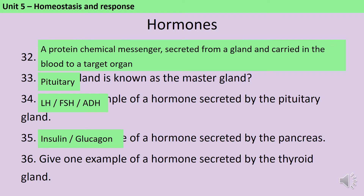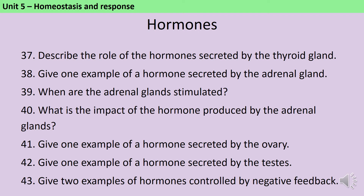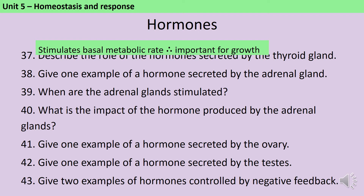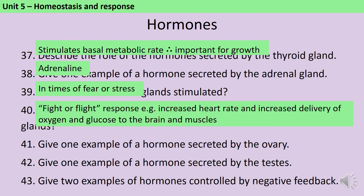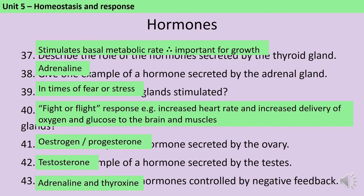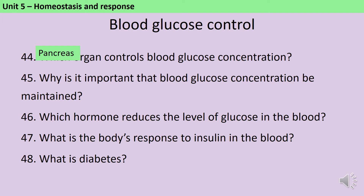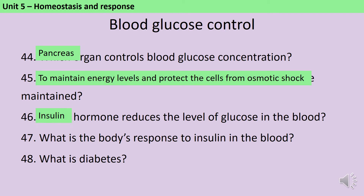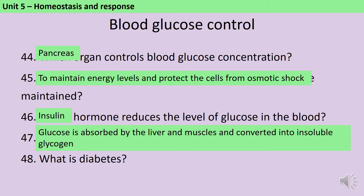The thyroid gland secretes thyroxin, which stimulates the basal metabolic rate and is really important for growth — if you don't have enough thyroxin you might not be as tall as you would have been otherwise. The adrenal glands secrete adrenaline, stimulated in times of fear or stress, causing a fight-or-flight response: heart rate increases and you breathe faster, increasing delivery of oxygen and glucose to the brain and muscles. The ovaries secrete oestrogen and progesterone, and the testes secrete testosterone. Both thyroxin and adrenaline are controlled by negative feedback. Insulin reduces blood glucose; glucose is absorbed by the liver and muscles and converted into glycogen, which is insoluble and won't affect water potential.